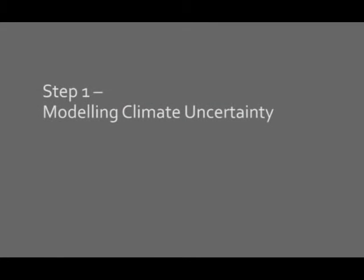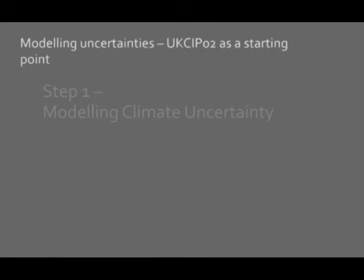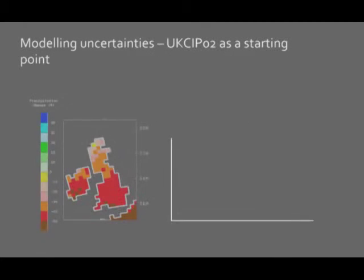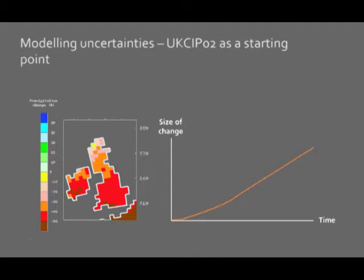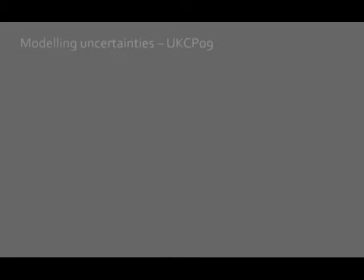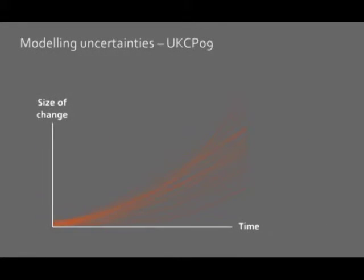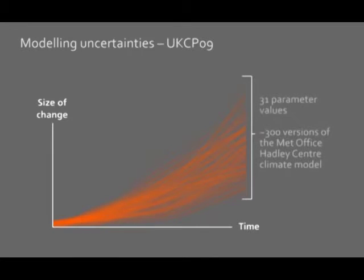In this presentation we're going to explore the UK climate projections, or UKCP09, and we'll look at the modeling that underlies them. In UKCP02 the model was run just once to produce the outputs that you have probably seen. In UKCP09 the big difference is that the model is run over 300 times, and each time the model is run some of the 31 parameter values are altered within plausible limits.